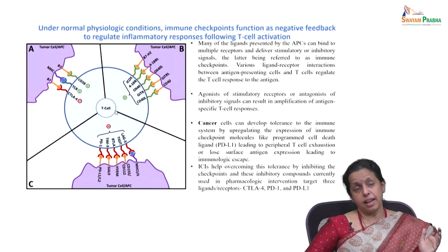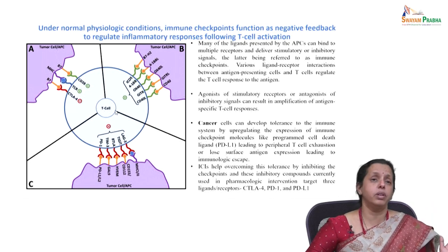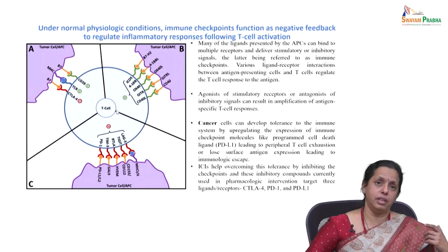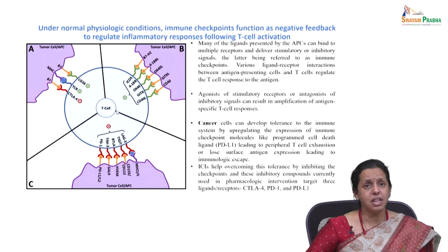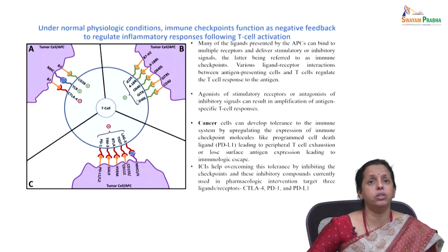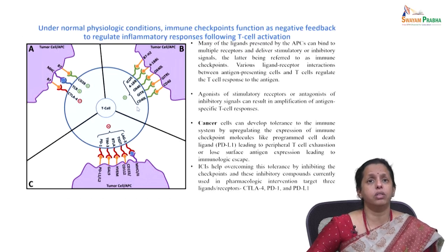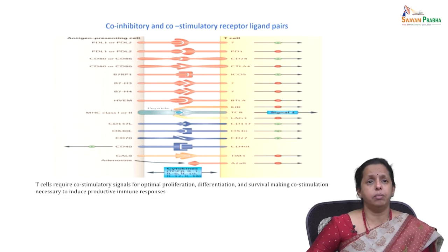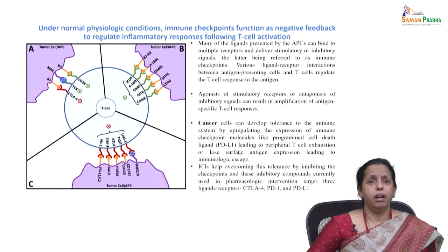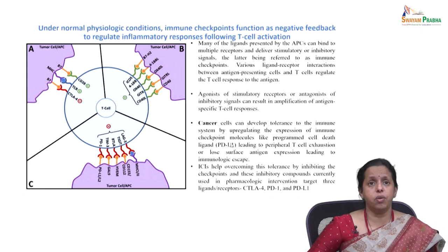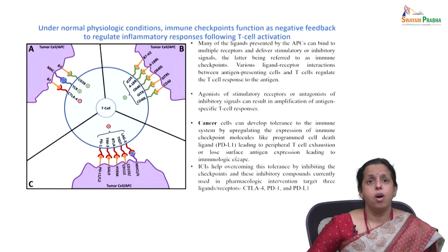Cancer cells must evade the host immune response and not be recognized as foreign. They become tolerant to the immune system by upregulating expression of immune checkpoint molecules like programmed cell death ligand 1 (PD-L1). Prolonged expression of PD-L1 leads to peripheral T cell exhaustion or loss of surface antigen expression, resulting in immunological escape.